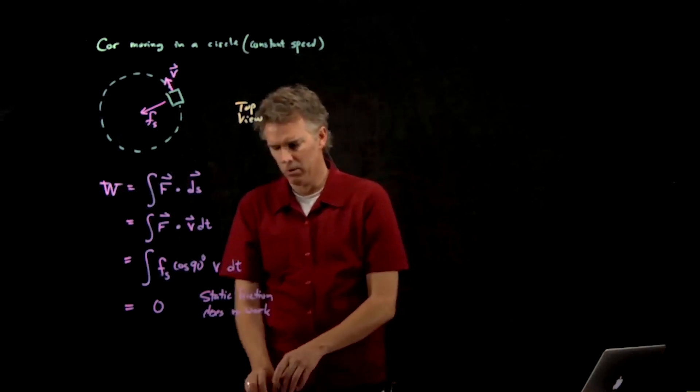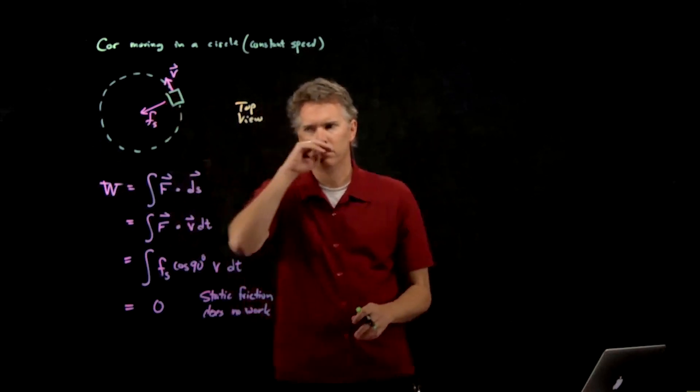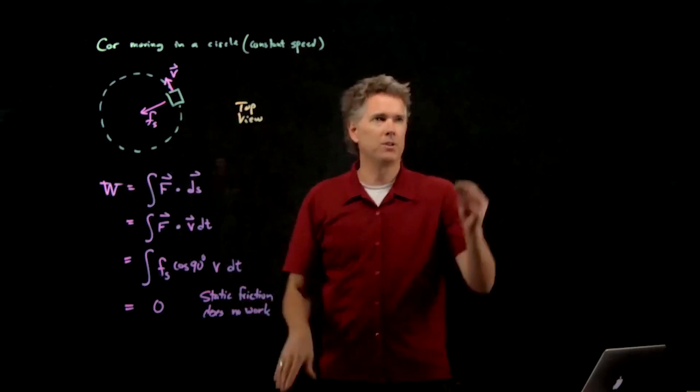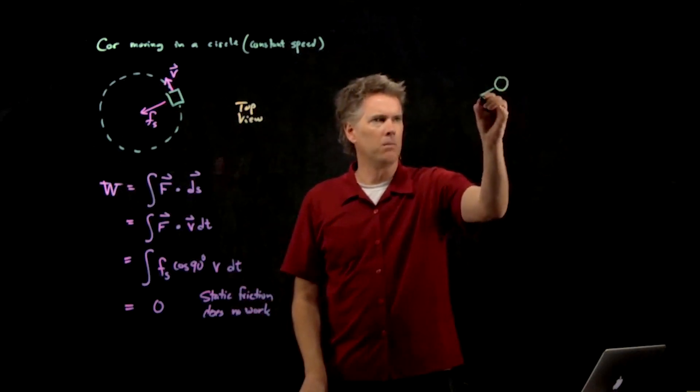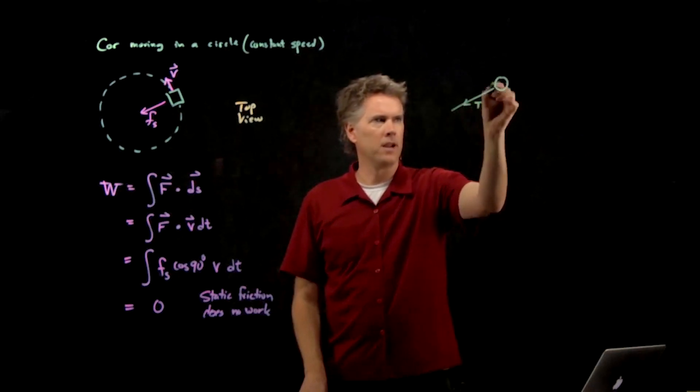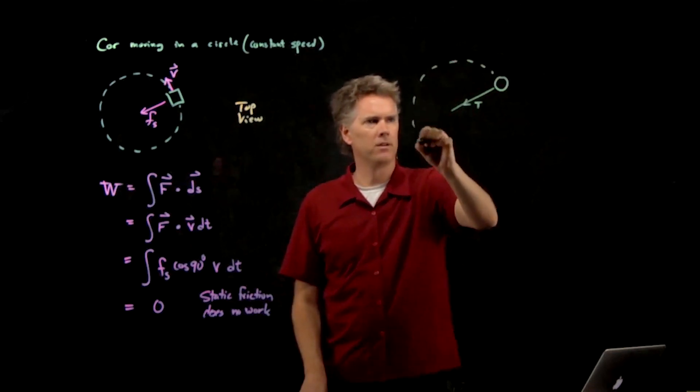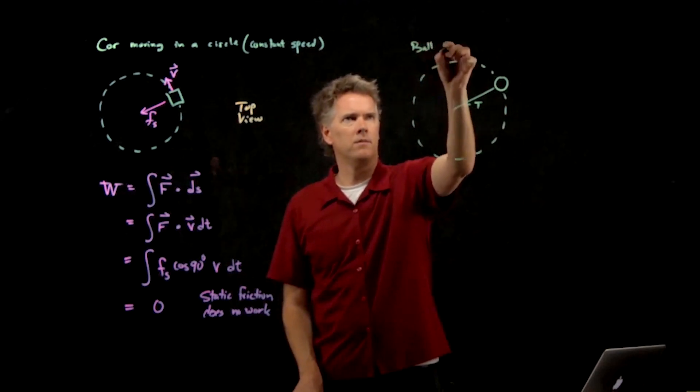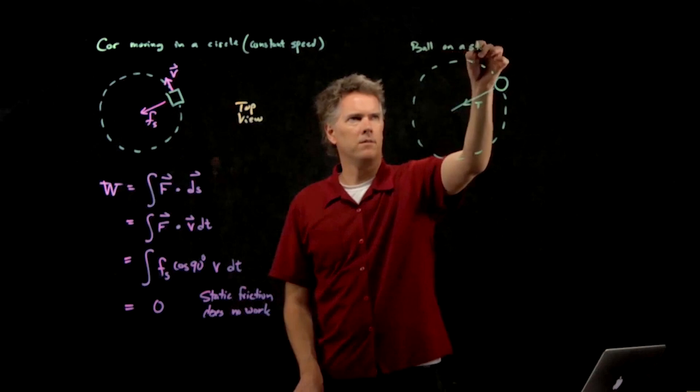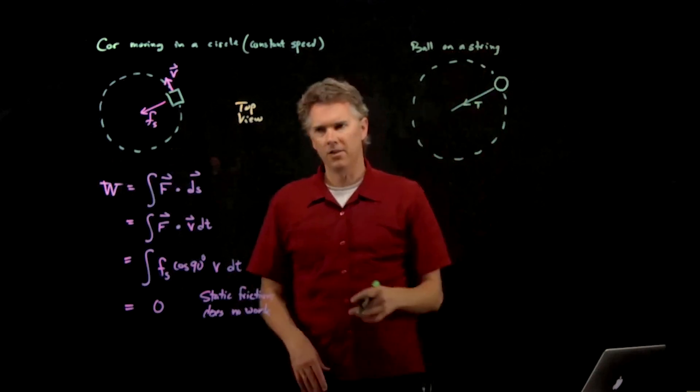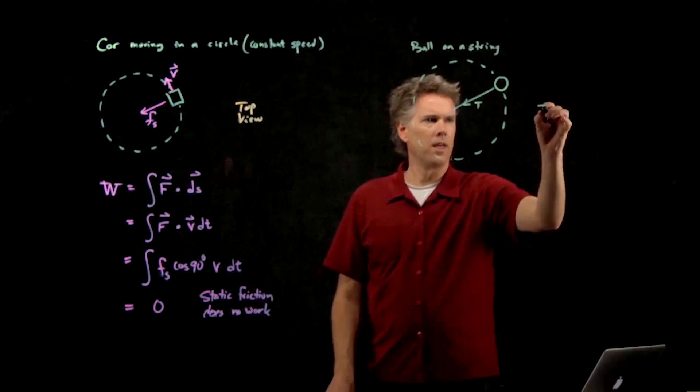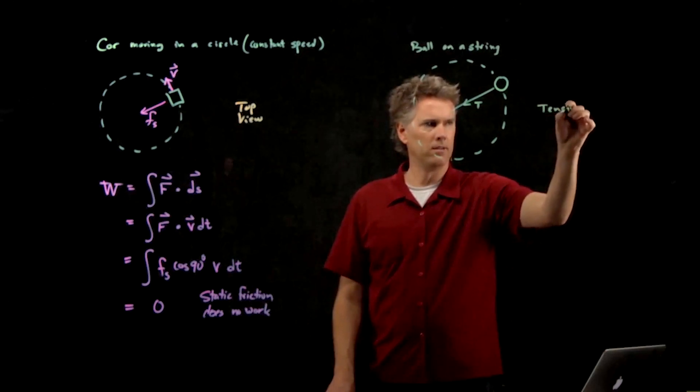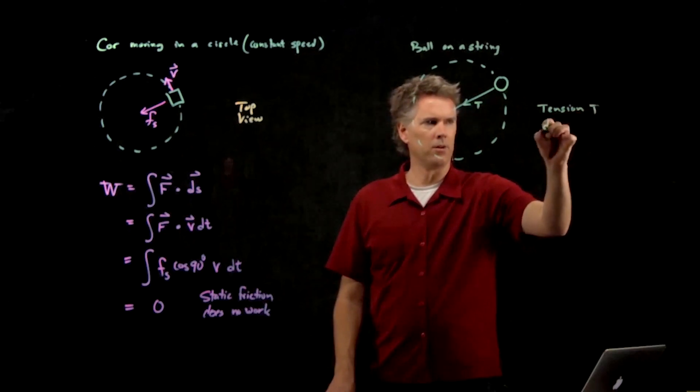And here's kind of the cool general idea. If you have an object that's moving in a circle, like a ball on a string, and there's tension in that string, and this thing is moving around at constant speed, then the tension T does no work.